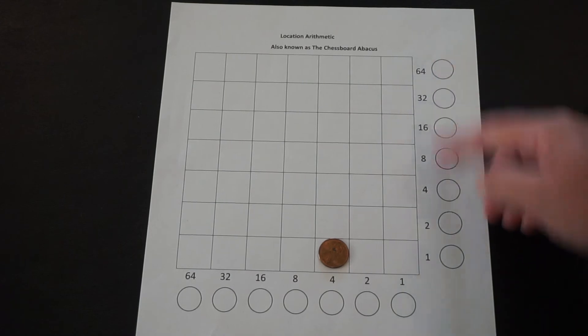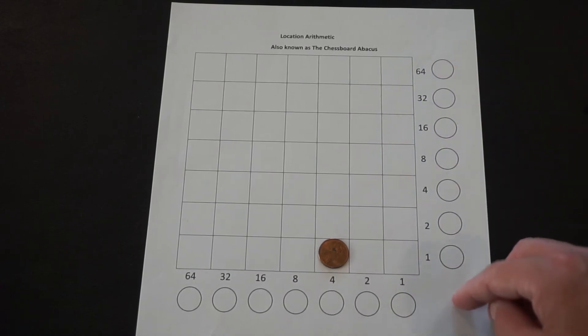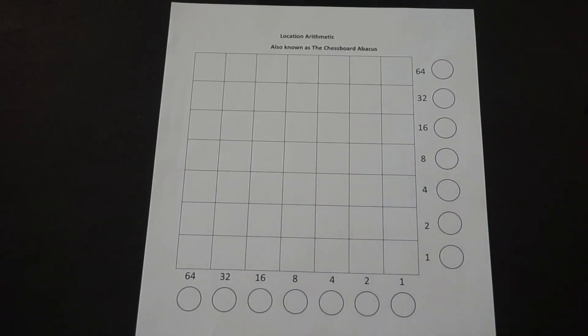The same thing would be true going up and down. And then the last piece we need to know before we can start working with this as a calculating device is that the hardest thing we're going to do is to change our ordinary numbers into location numbers.